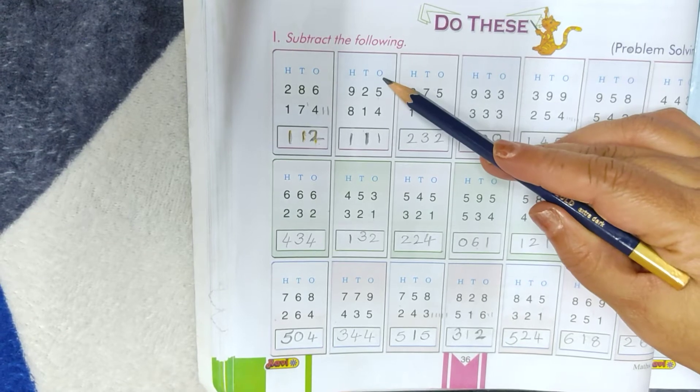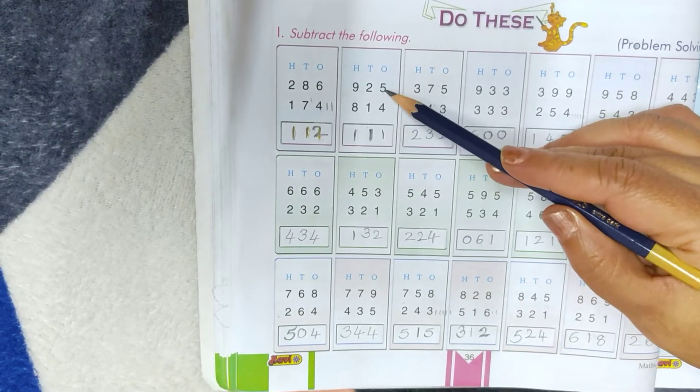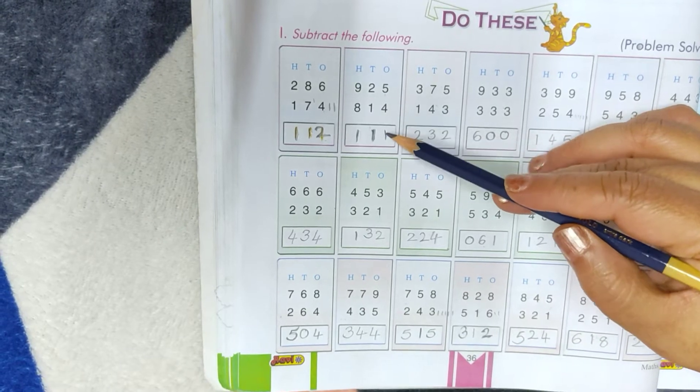Again, the same manner. Subtract the numbers which are in 1's place. 5 minus 4, 1.